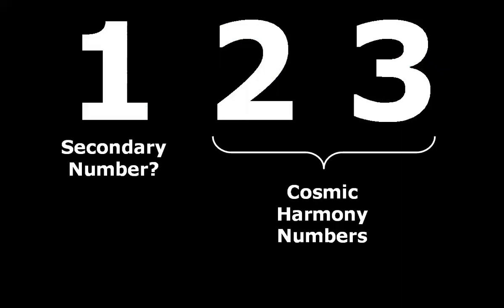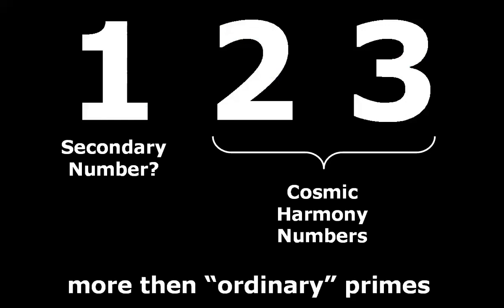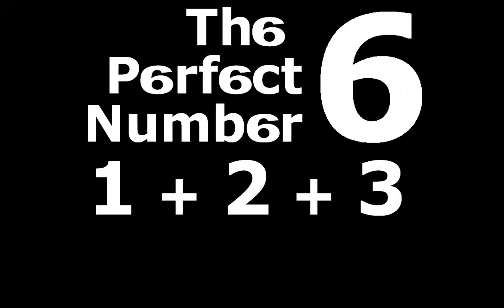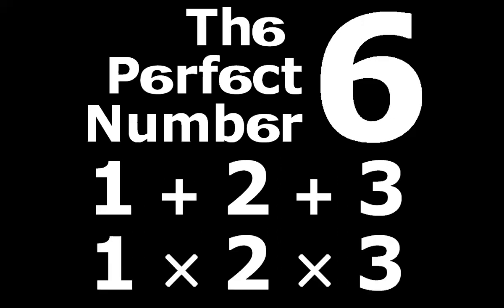Most people say that one is not a prime number, but if one is not a primary number then the conclusion is that one must be a secondary number, and that doesn't make any sense. In my research, the two and the three are far more important than just a prime number. They are not ordinary prime numbers — they are extraordinary prime numbers and I call them cosmic harmony numbers. Also the one is extraordinary. So they are not ordinary primes and therefore they are not included in this explanation of the prime rhythm. This has everything to do with the perfect number six. Six is the addition of one, two and three, but also the multiplication of one, two and three. That's why we call six the perfect number.